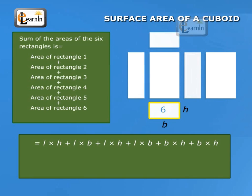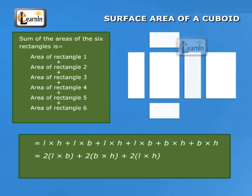Which equals two into L into B, plus two into B into H, plus two into L into H, which is equal to two into LB plus BH plus HL.